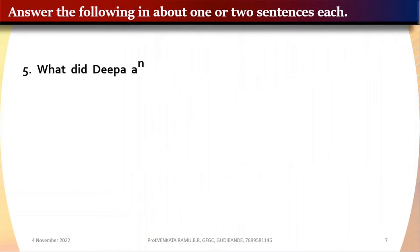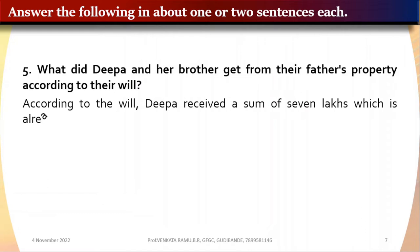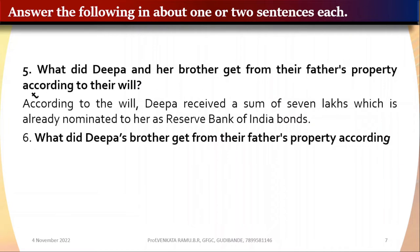Question 5: What did Deepa and her brother get from their father's property according to the will? According to the will, Deepa received a sum of seven lakhs, which was already nominated to her as Reserve Bank of India bonds.